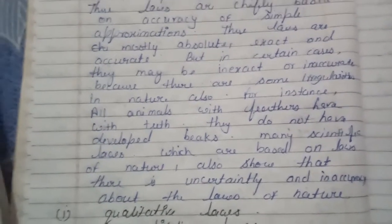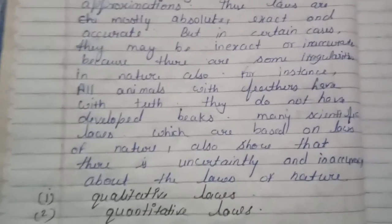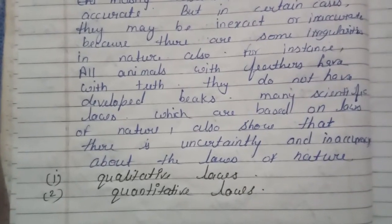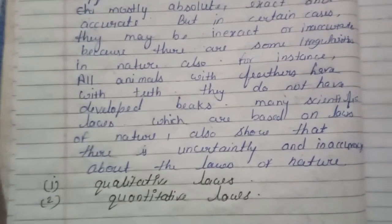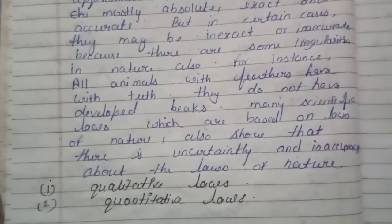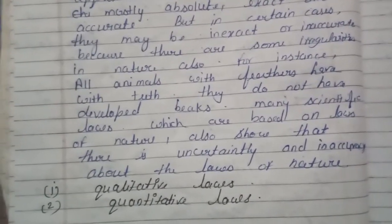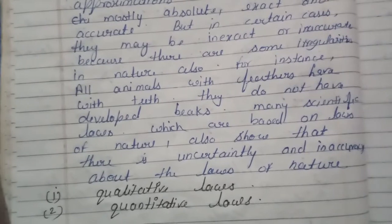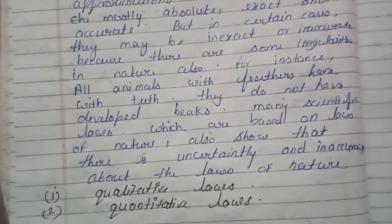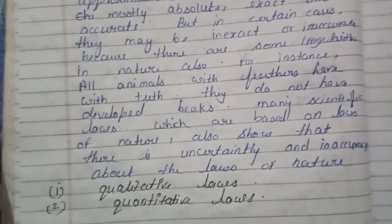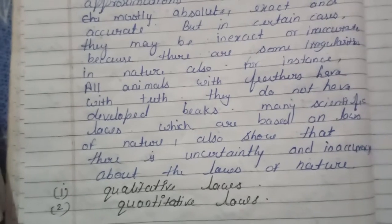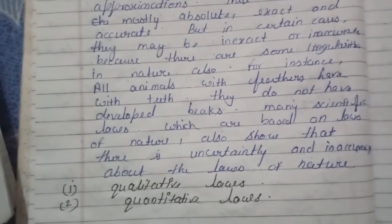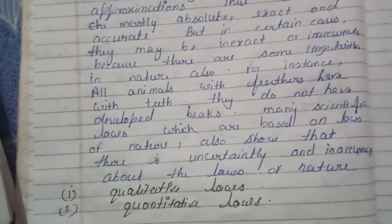Harlan clearly points out that the laws of nature are statements of facts, also known as informatics of nature. They are good guides but are not always true. The laws of nature are of two kinds: qualitative and quantitative. 'All animals with feathers have wings' is a qualitative law of nature. But many birds have feathers with teeth and do not have developed wings.